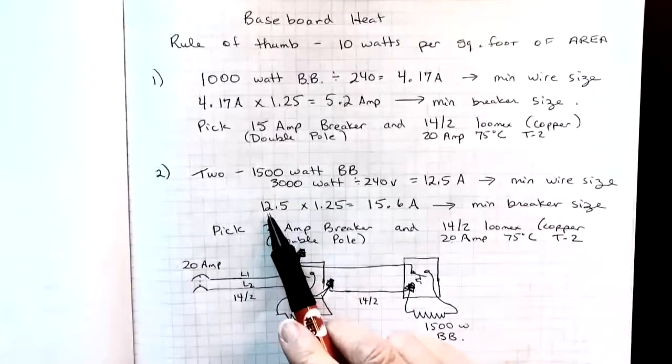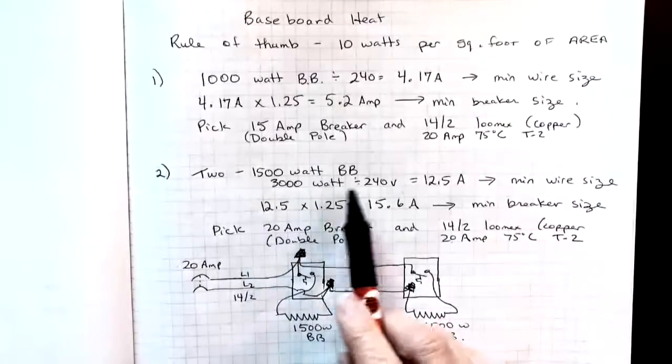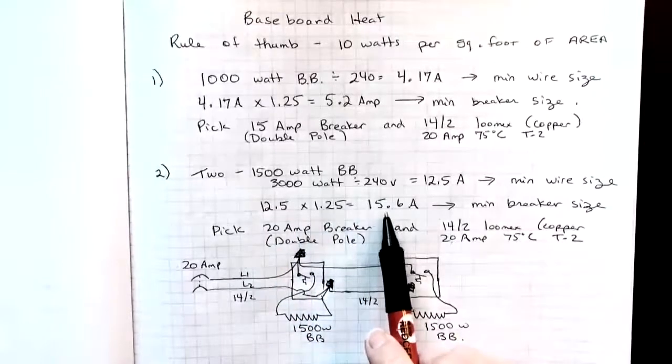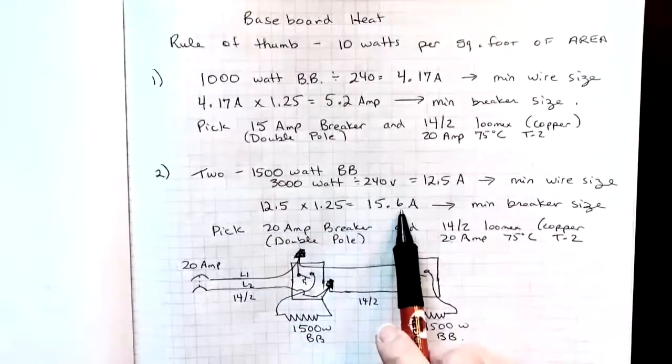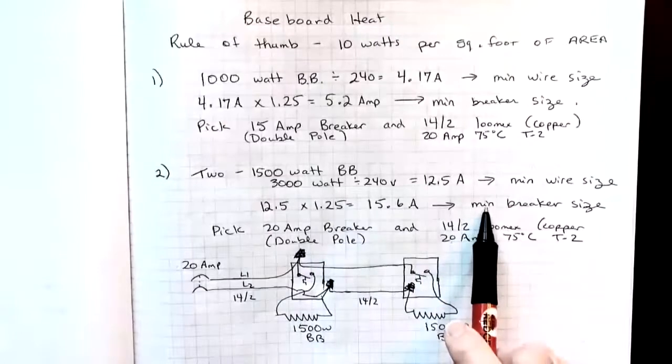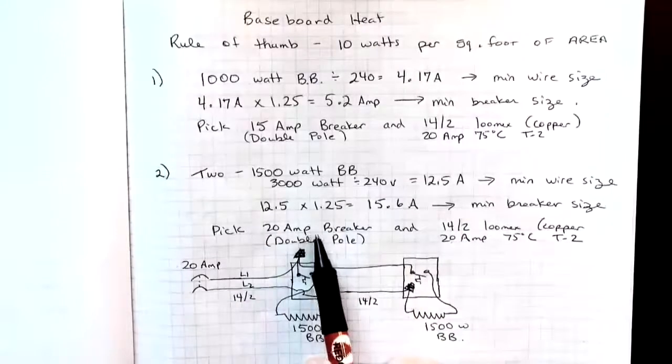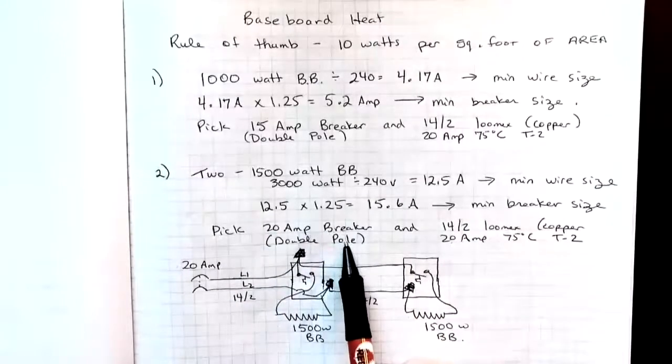Then to pick a breaker size, I'll take that 12.5, multiply it by 125 percent, gives me 15.6. That's going to be my minimum breaker size. So I choose the next size available and it's 20 amp breaker. And that's going to be a double pull.